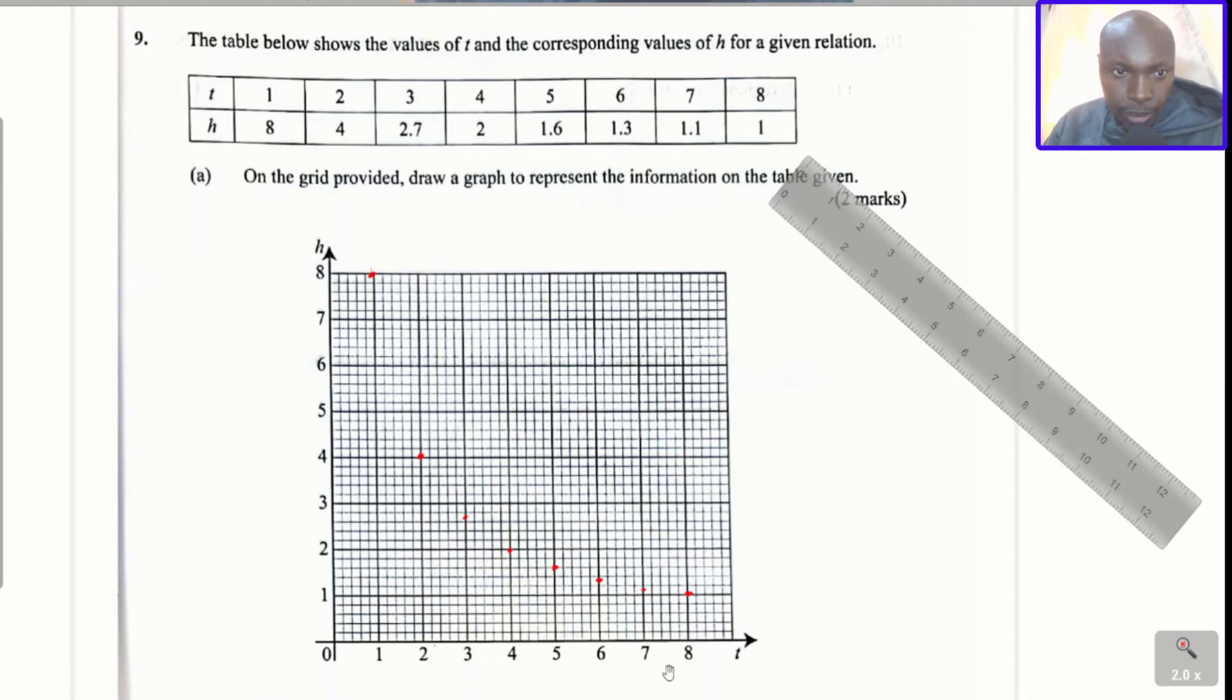Question number nine. The table below shows the values of t and the corresponding values of h for a given relation. On the grid provided, draw a graph to represent the information on the table. Given two marks, so all you're going to do is just the plotting.